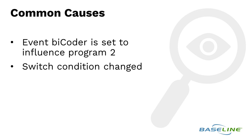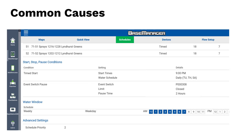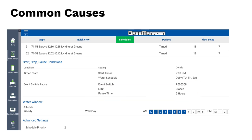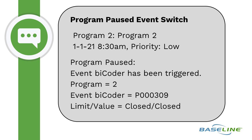Common causes for a Program Paused Event Switch include setting up an event bicoder to influence a program with a start, stop, or pause condition, and the switch condition changing to influence the program. This program has a pause condition set up using an event bicoder with serial number P000308. When the switch contacts change to closed, there will be a two-hour pause time.